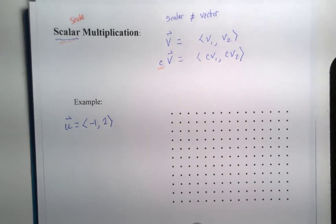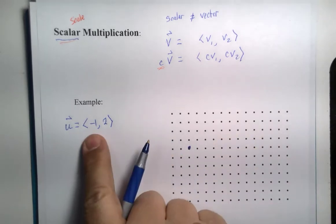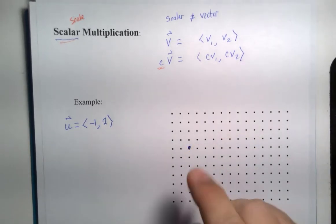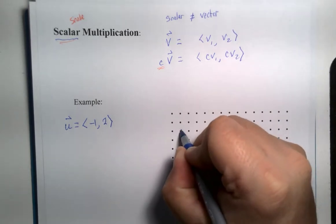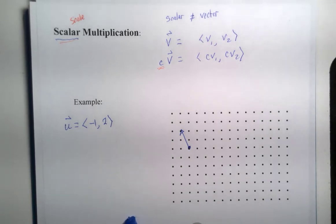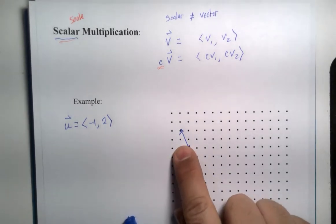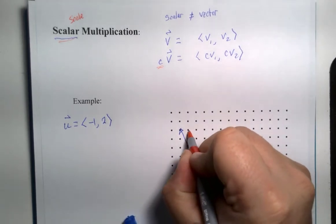So visually that means if I were to maybe draw the vector here, that's left one and up two units. That would be this vector right there. Starts at a point, it goes left one and up two. So that would be our vector u.